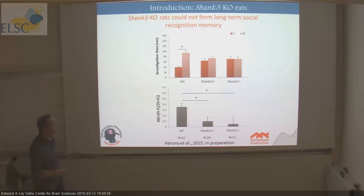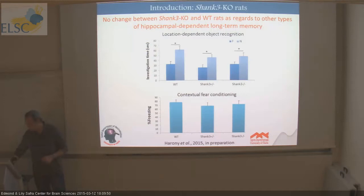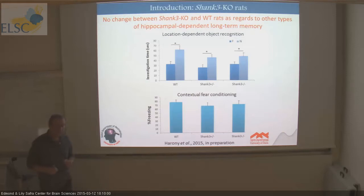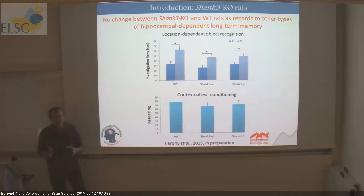We found the phenotype. We also wanted to check whether this was a general long-term memory problem or something specific to social memory, so we tried two paradigms of hippocampal-dependent long-term memory: location-dependent object recognition and contextual fear conditioning. Both showed intact memory. So there is no problem with general long-term memory — just with social long-term memory. We then applied oxytocin to the animals just before their exposure to the juvenile. Saline injection did not change the behavior, but oxytocin injection caused heterozygote and homozygote rats to show long-term social recognition memory 24 hours after exposure.